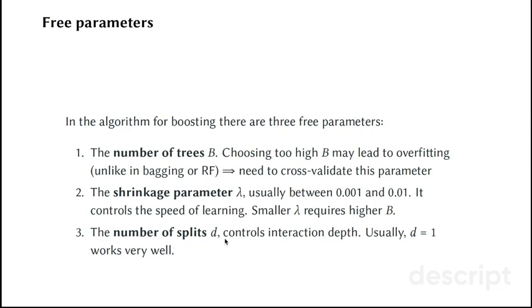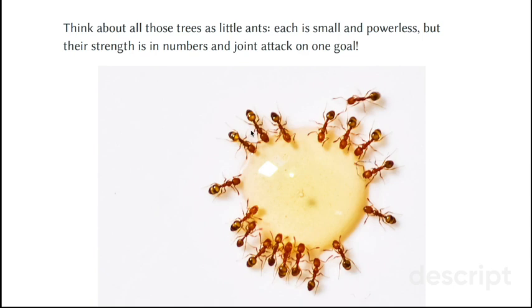And finally, the number of splits d which are allowed in each of the trees. Usually, d equals 1, meaning that allowing only one split works very well. Why? Because you can think of it as all these trees as being little ants, each is small and powerless, but their combined strength is in numbers, and they jointly attack on one goal.